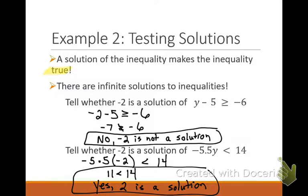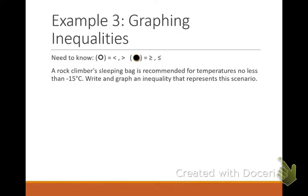Why is negative 3? So Y is the number — that would be negative 2. I plugged in negative 2 for Y. I could plug in whatever number I want for Y; all I'm doing is saying if I plug in this number, would it make it true? They just gave us negative 2. On your homework, they'll give you different values too.